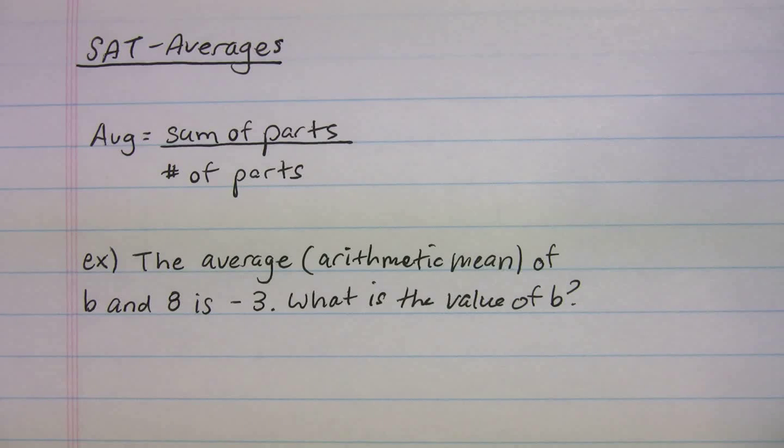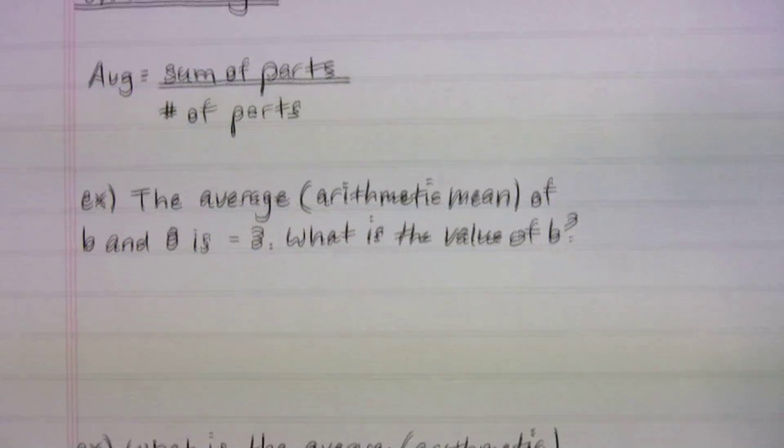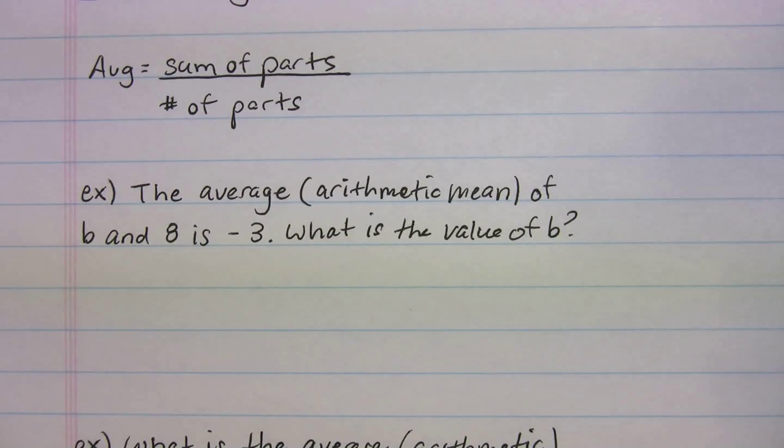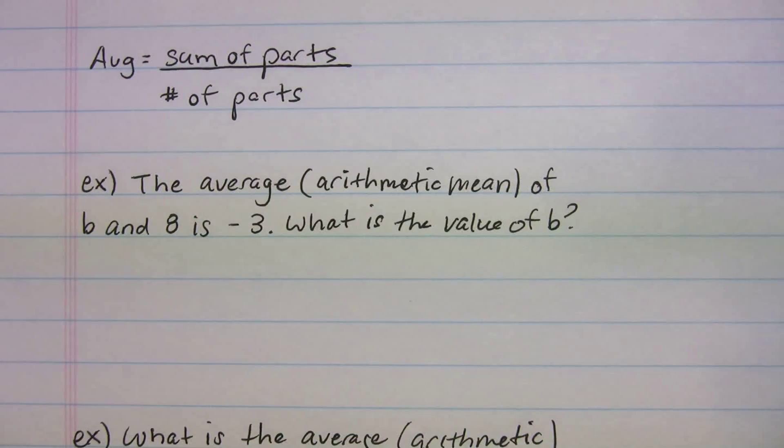Let's do a problem. Let's see if you can use the average formula and plug in correctly. So let's take a look at an example here. Actually, I'll leave that there so you have the average formula. Okay, so this says the average or arithmetic mean of b and 8 is negative 3. What is the value of b? So all you're going to do is plug into your average formula.